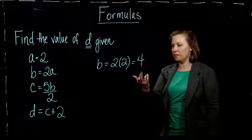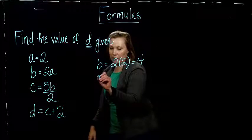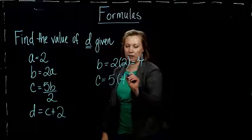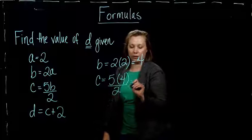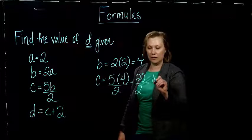So I know what b is now. So now I can put 4 in for b in this equation for c. So I get 5 times 4 over 2, which gives me 20 divided by 2, which is 10.